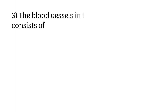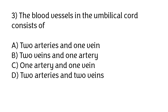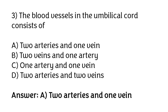The blood vessels in the umbilical cord consist of: two arteries and one vein, two veins and one artery, one artery and one vein, two arteries and two veins. The correct answer is option A — the blood vessels in the umbilical cord consist of two arteries and one vein.